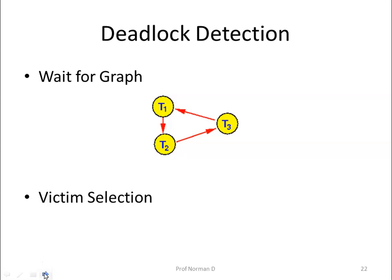Moving to deadlock detection, this is another approach to deal with deadlocks by detecting whether a deadlock actually exists in the system. The system checks if a state of deadlock actually exists. One possibility is to check for a cycle every time an edge is added to the wait-for graph. When a wait-for graph is created, we check if there is a cycle. To deal with a detected deadlock, one method is by selecting a victim.